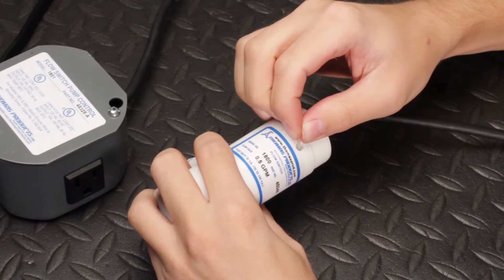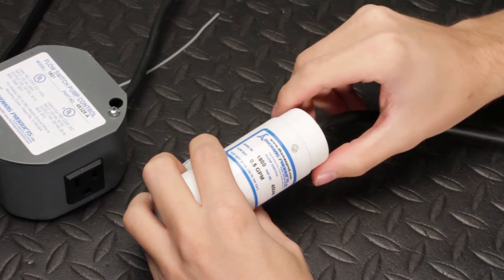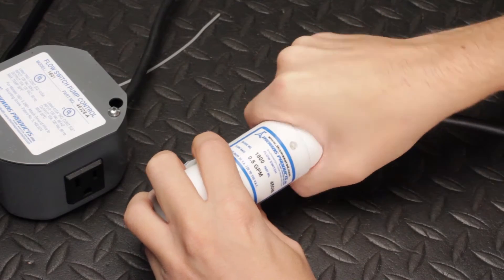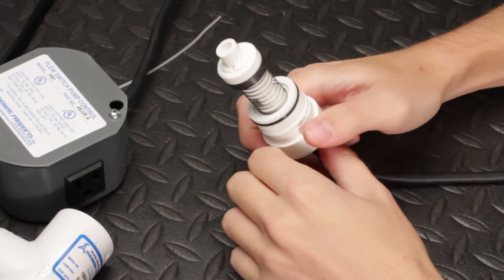Start by removing the locking wire. Next, remove the bonnet assembly from the body. It helps to twist it to get it out of the body.